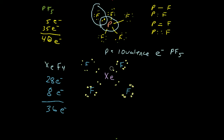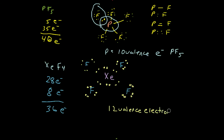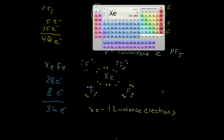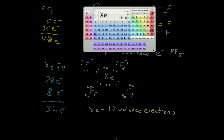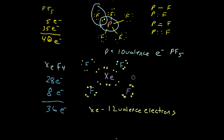You might be tempted to redo this and try double bonds, or think you made a mistake — but you didn't. You're just going to add those extra four electrons to xenon: one, two, three, four. So xenon ends up with two, four, six, eight, ten, twelve valence electrons total. The 5d orbitals on xenon house those extra electrons — there's more room for them there — and that's how it remains stable while exceeding the octet rule with twelve valence electrons.